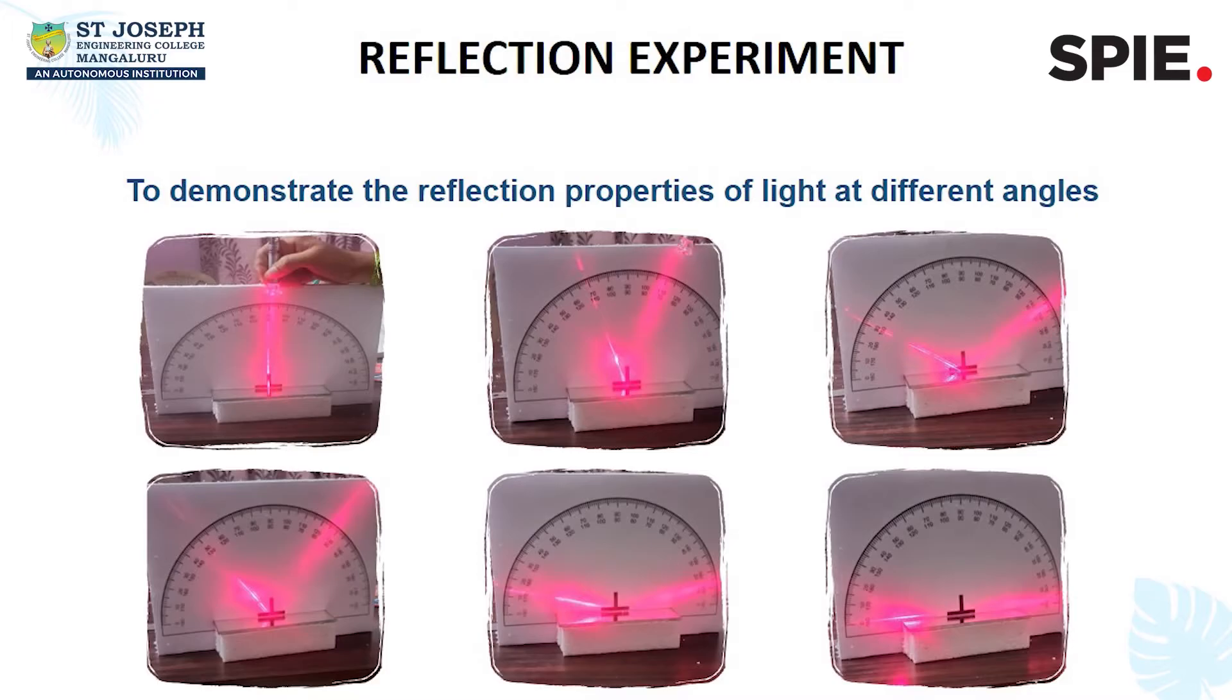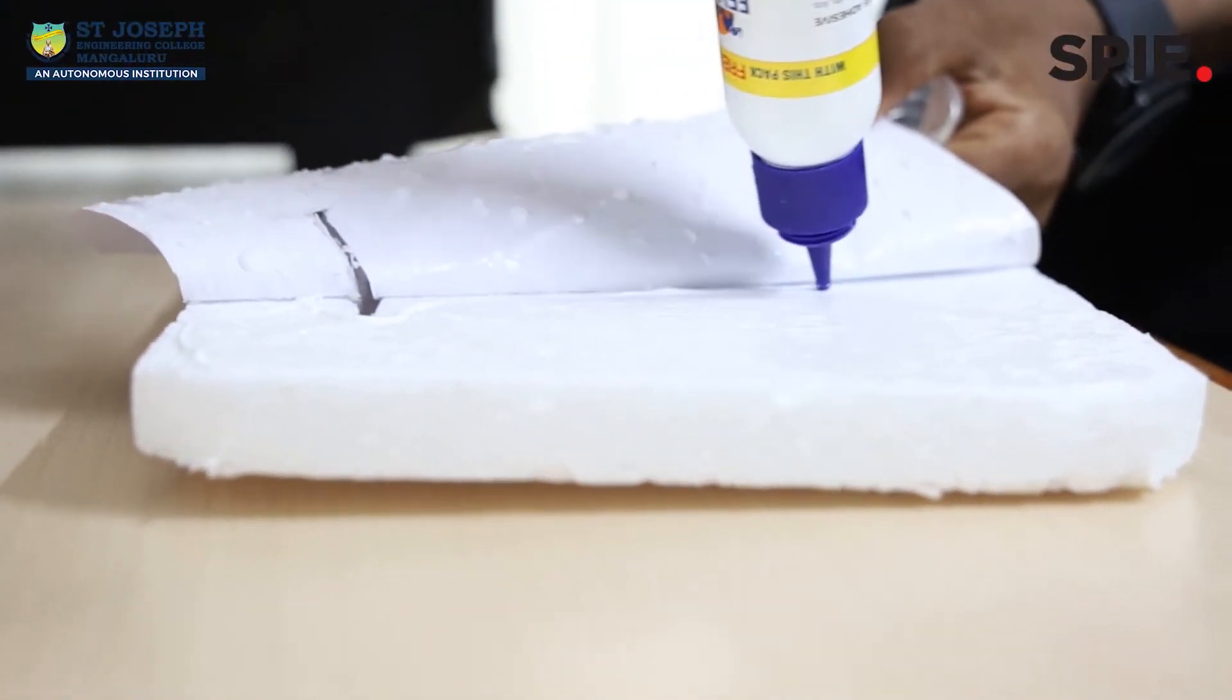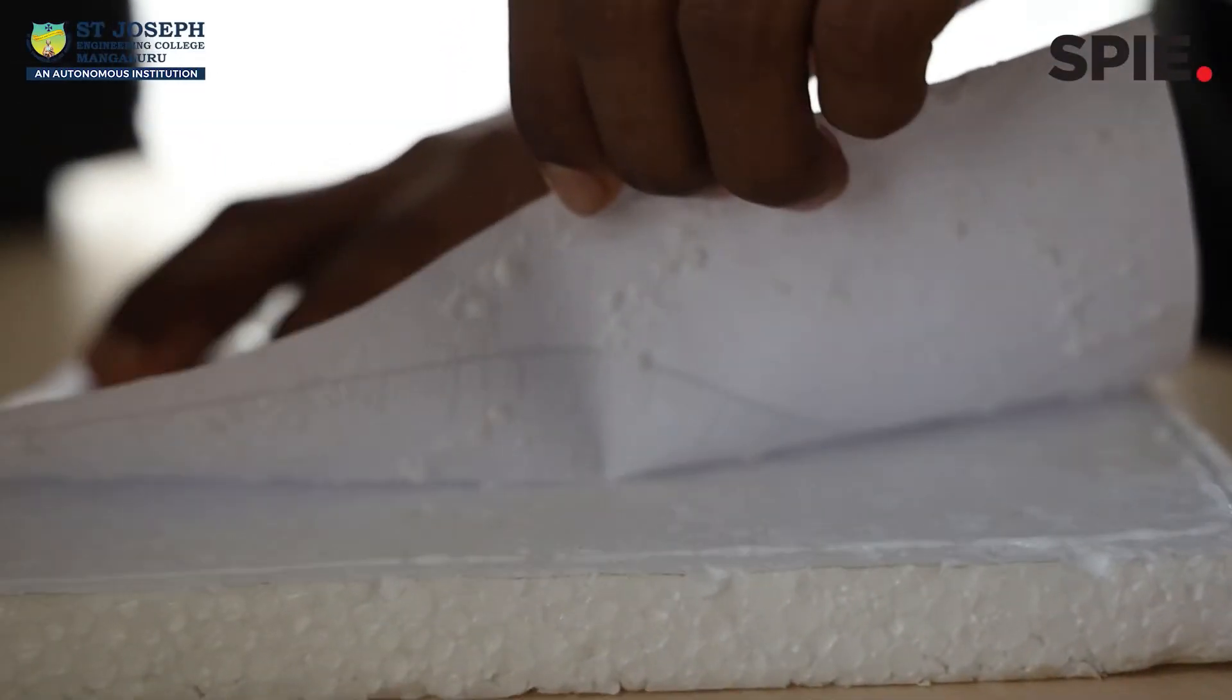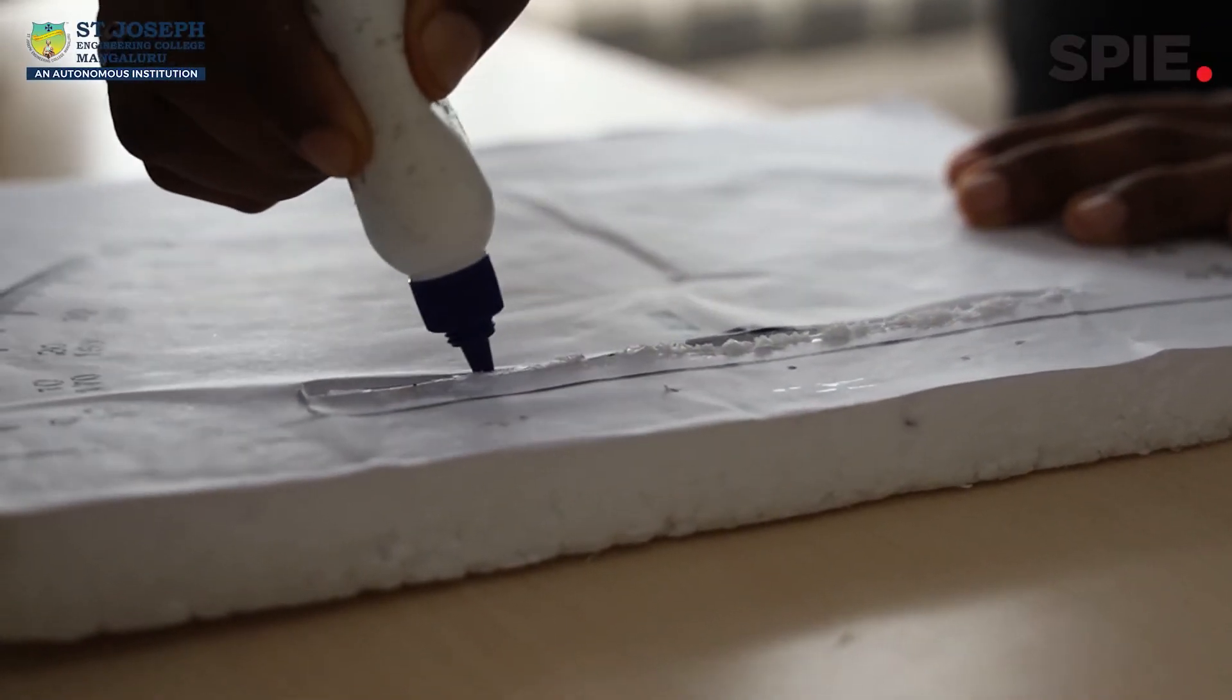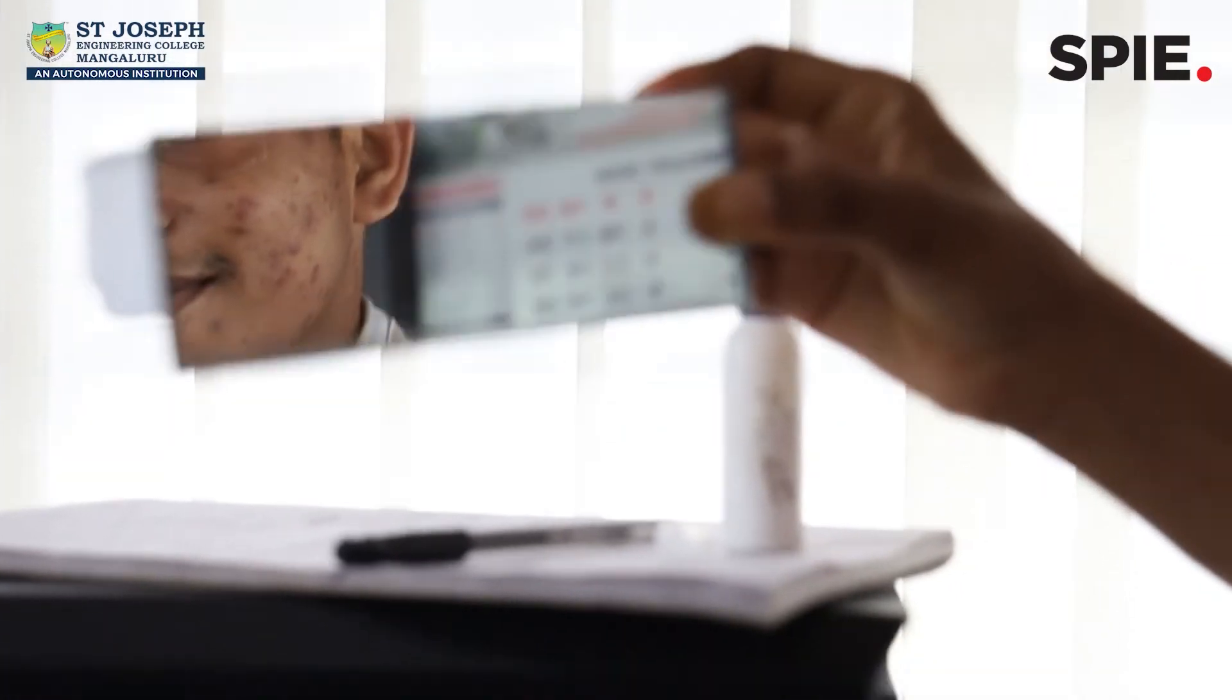In this video, we shall learn the reflection properties of light at different angles. To construct this model, we use Thermacol as a supporting structure. A printout of a protractor is glued on it. A mirror is mounted at the bottom of the protractor.